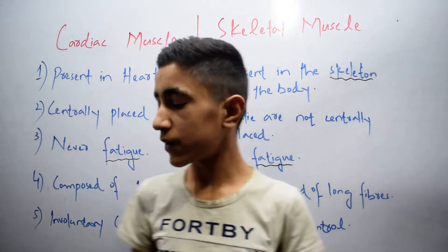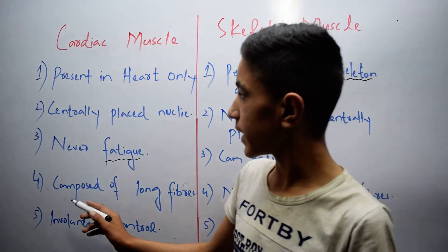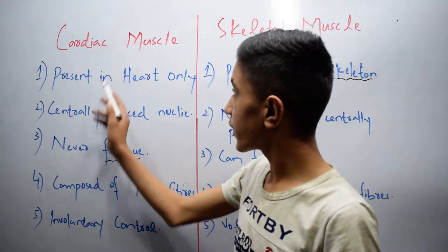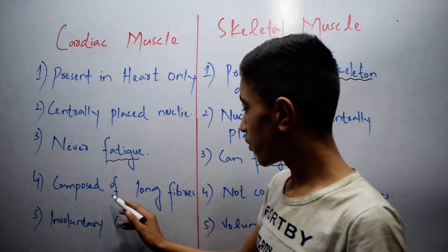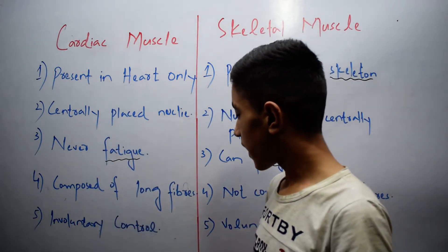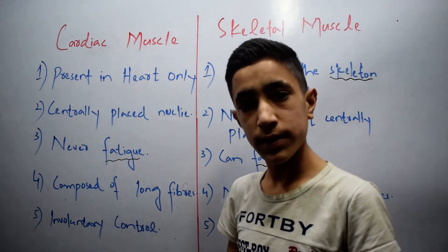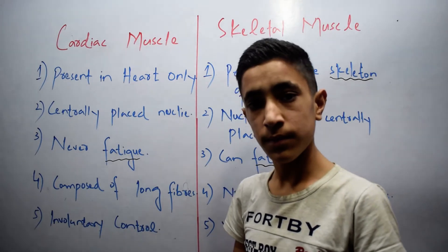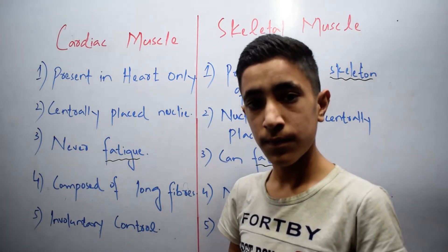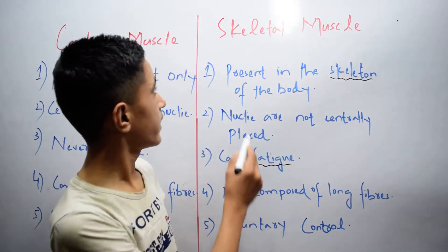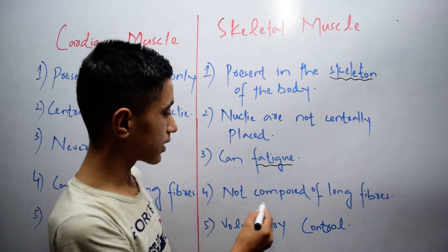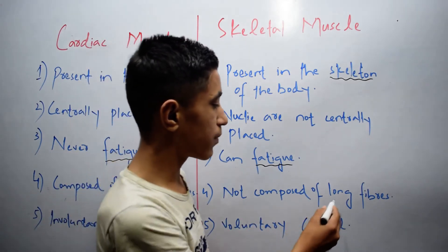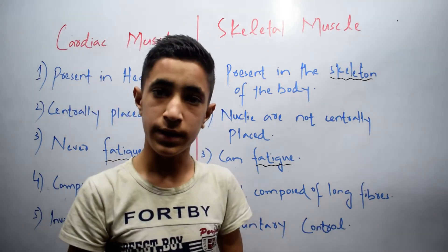The fourth difference is that cardiac muscles are composed of long fibers, while skeletal muscle is not composed of long fibers.